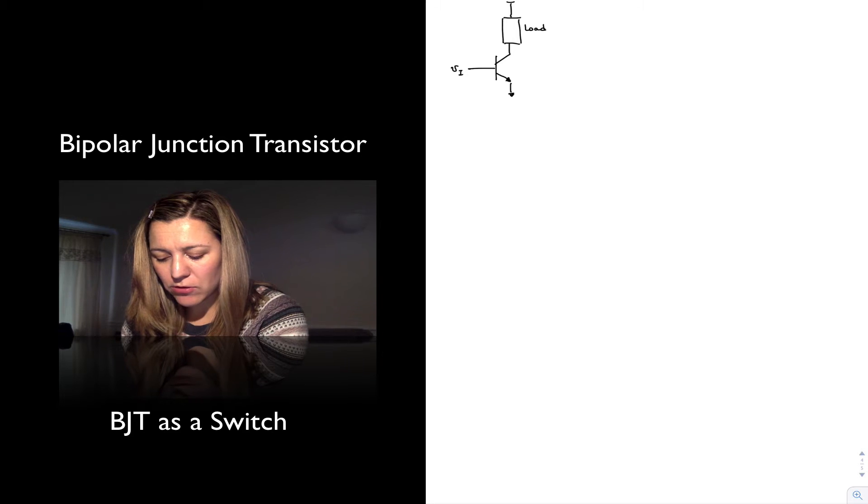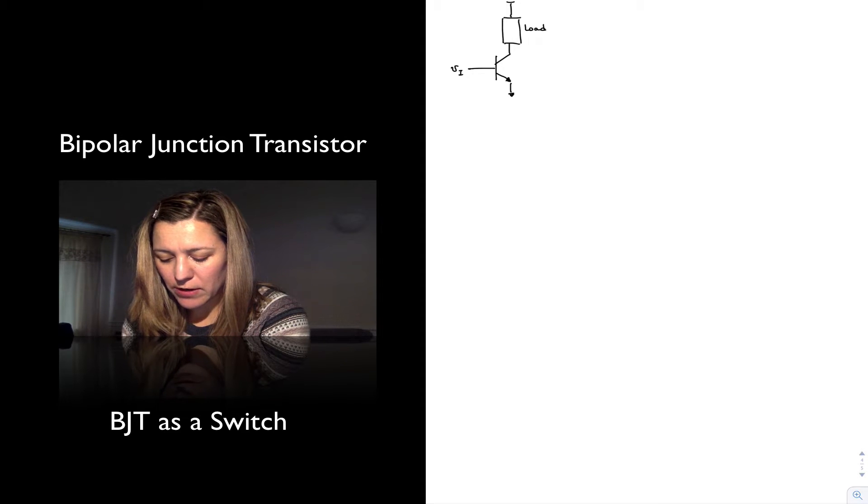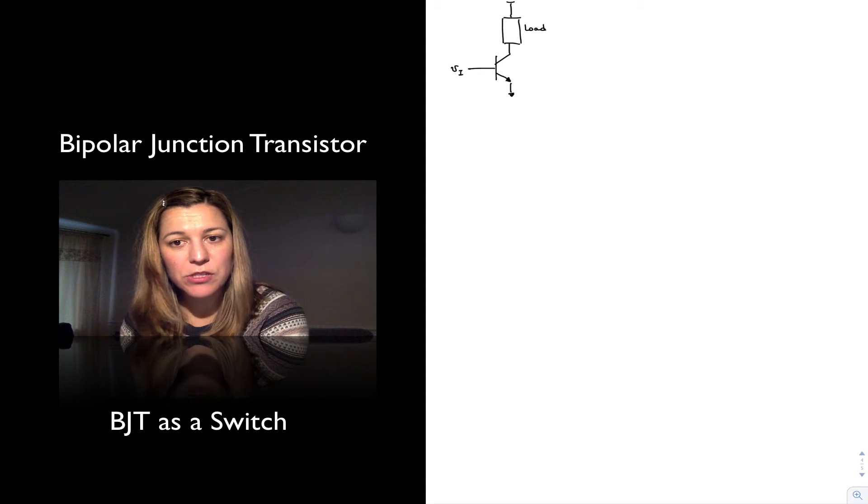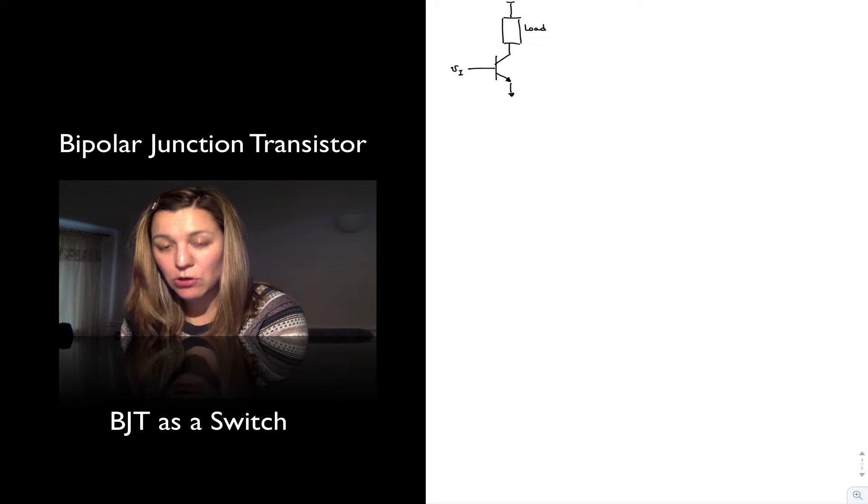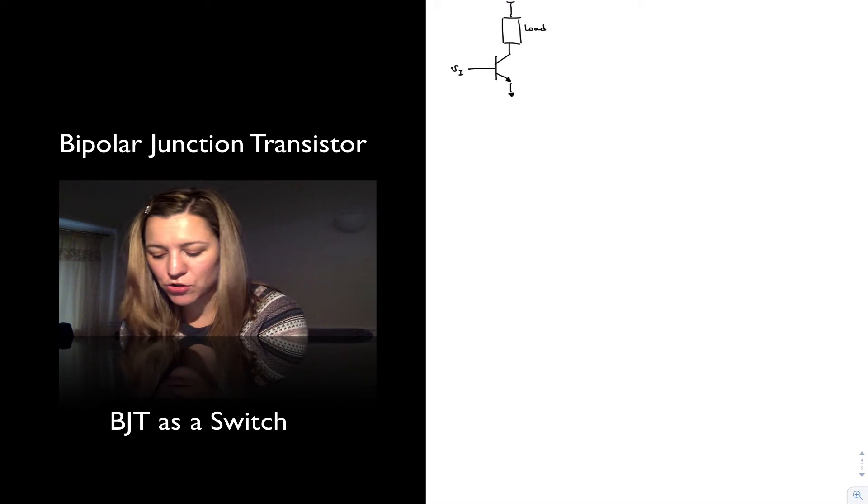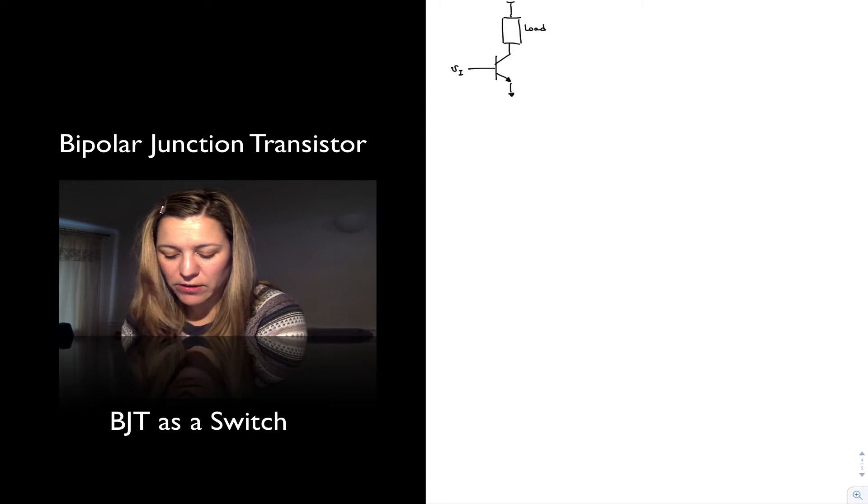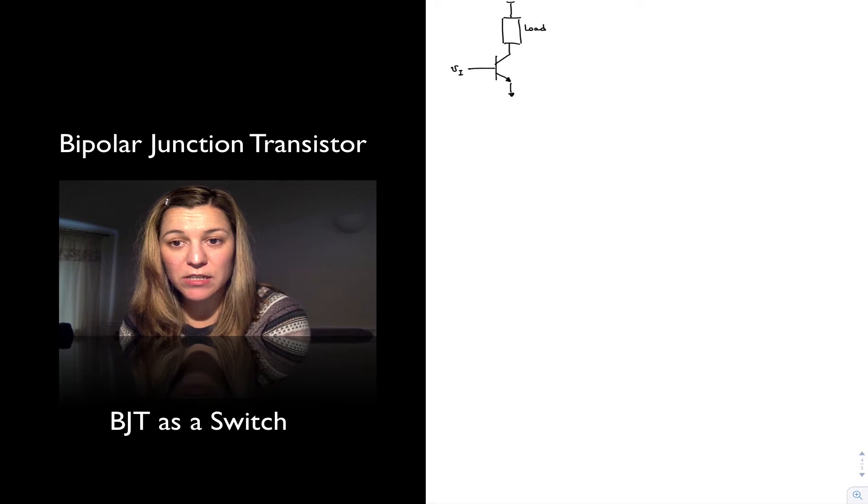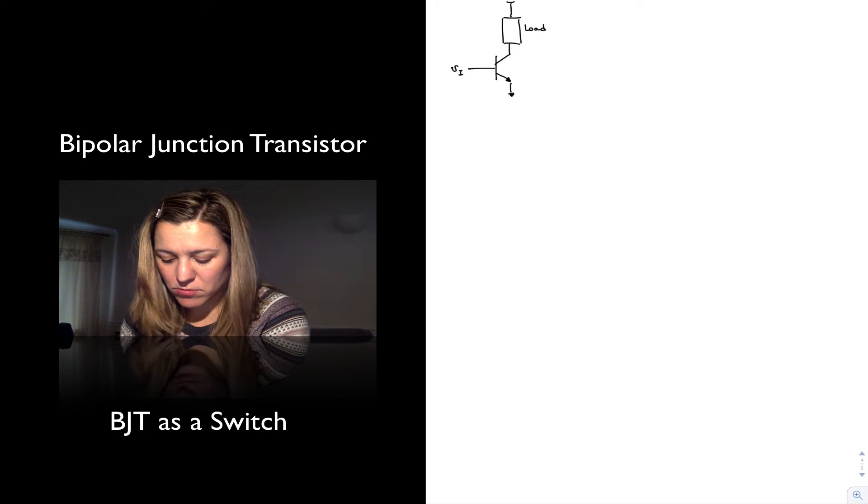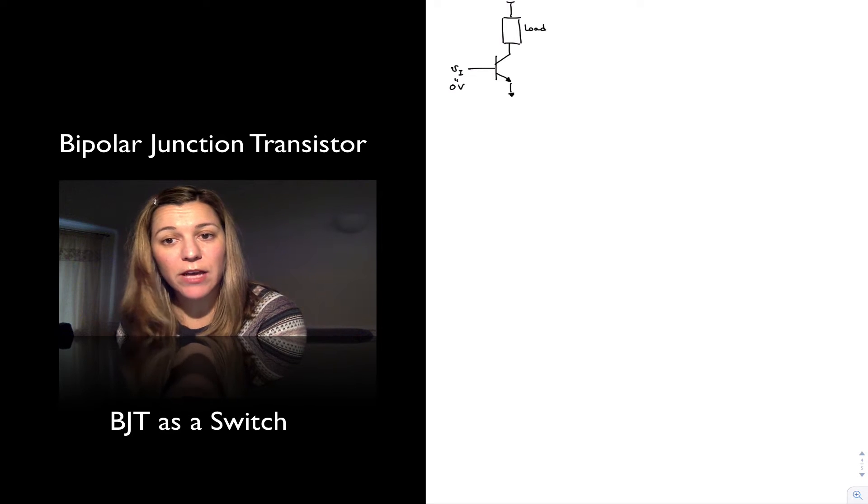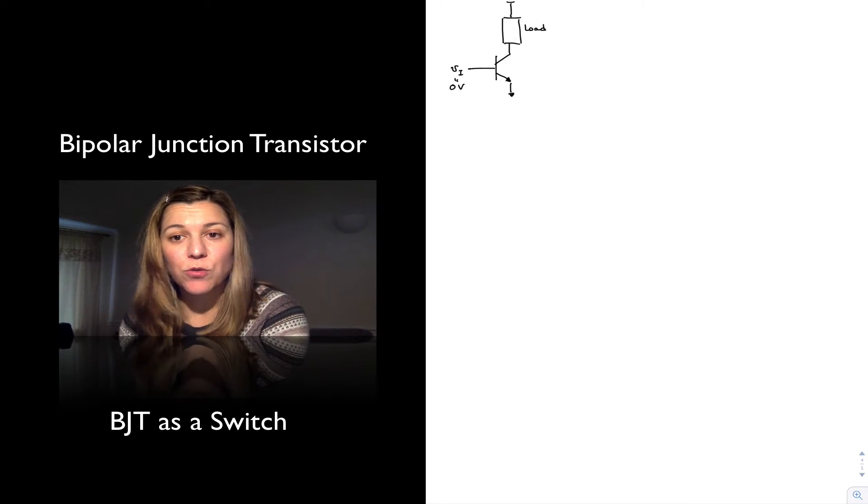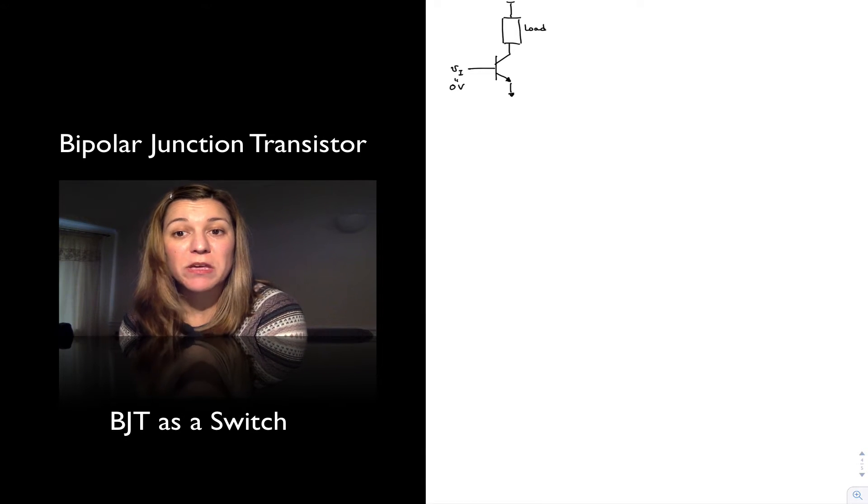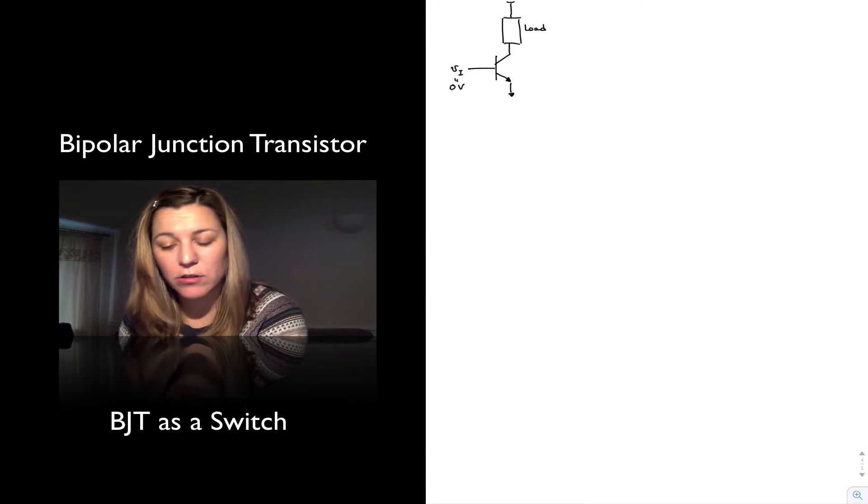And you can see that if I apply an input signal VIN so that I turn on my base emitter junction, initially, if my input signal is equal to zero, what I'm going to have is a transistor in cutoff. And so there's going to be no current flow through my load. So we consider the switch as being off.